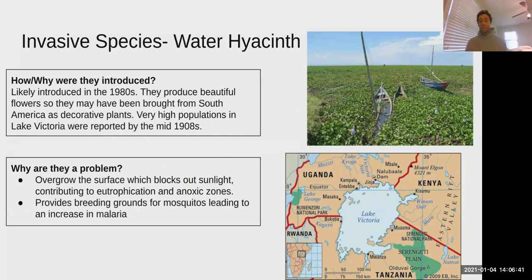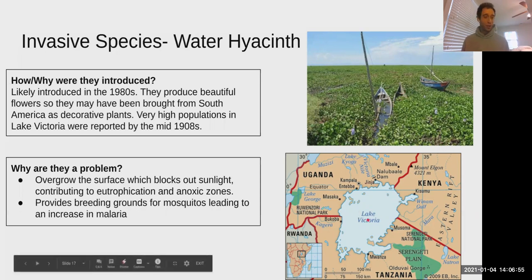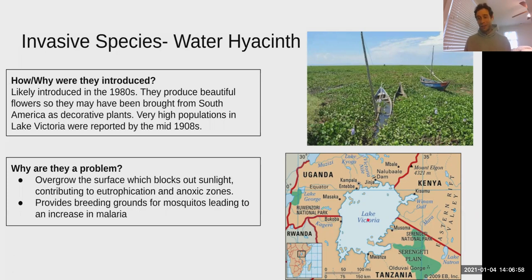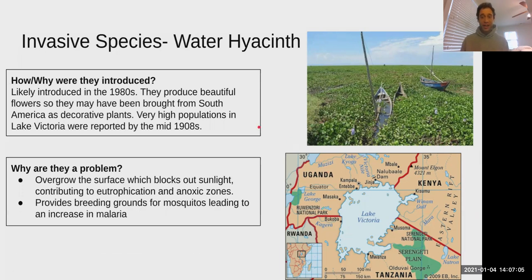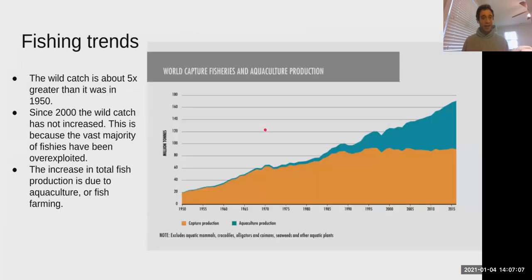Lake Victoria is a great case study because you can cite it for any threat to aquatic biodiversity — cultural eutrophication, invasive species, and overfishing all occur there. Transitioning now to fishing threats, starting in 1950, which was the birth of industrial fishing.